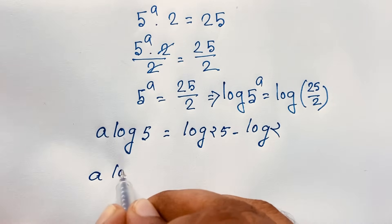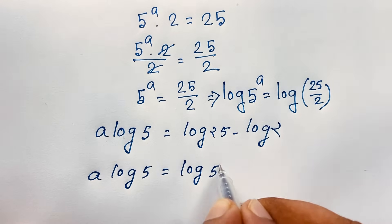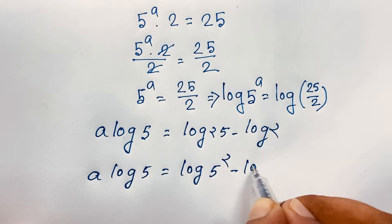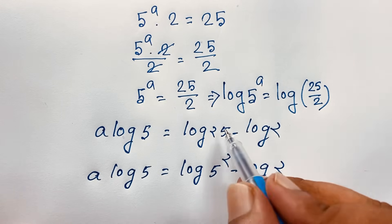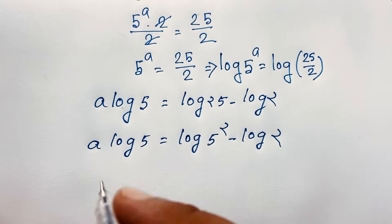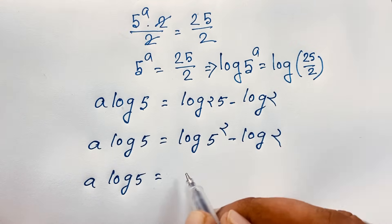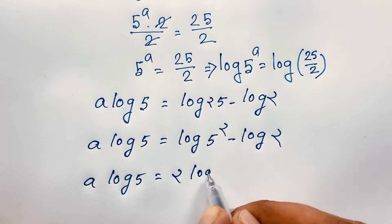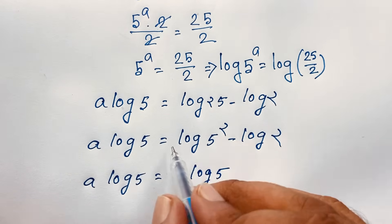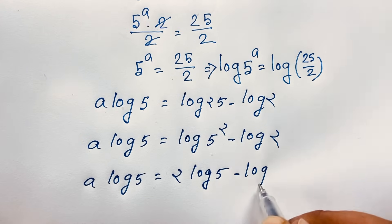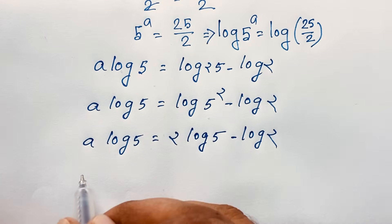So a times log 5 is equal to log(5 squared) minus log 2. Since 5 squared is 25, we write this as 2 log 5 minus log 2 by moving the exponent to the front. Then I divide both sides by log 5.